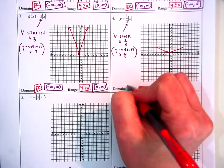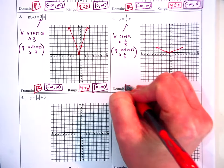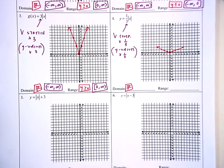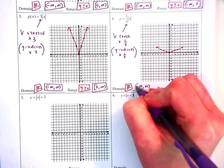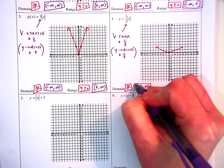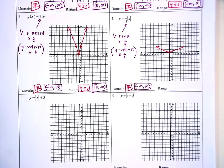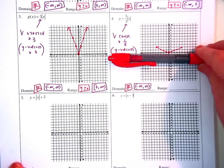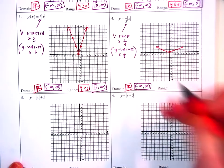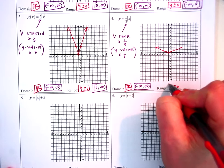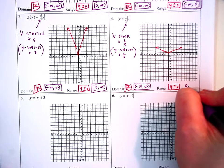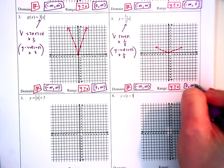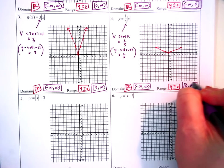The domain is always all real numbers — negative to positive infinity in soft brackets. For the range, the lowest value is zero or anything more, so Y is greater than or equal to zero, or from zero to infinity with a hard bracket on zero.